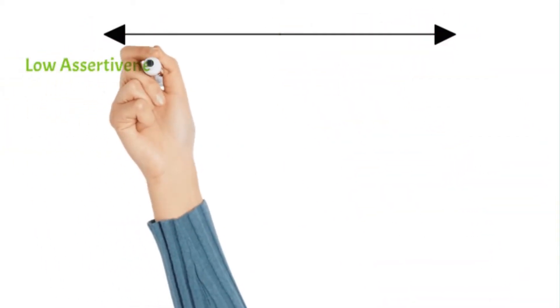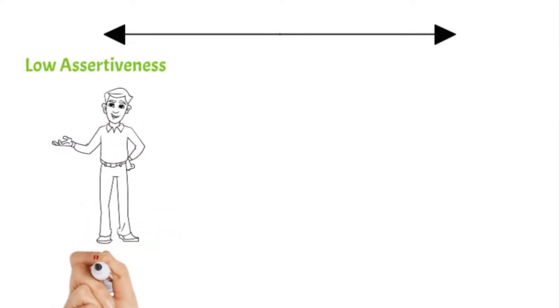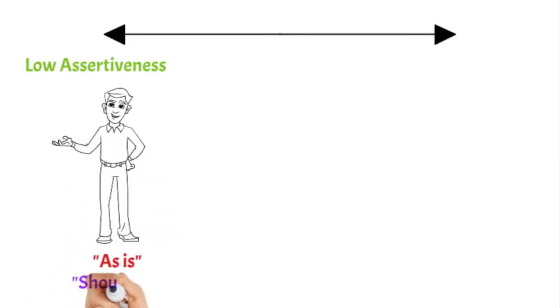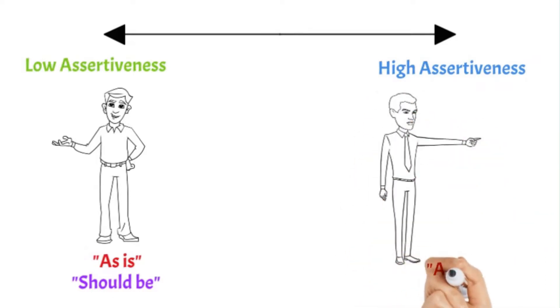Assertiveness is the degree to which individuals are, and should be, assertive, confrontational, and aggressive in their relationships with others.